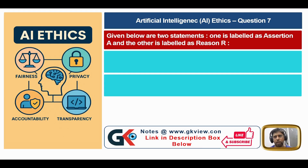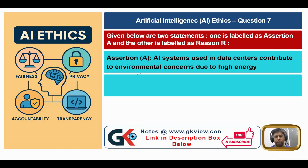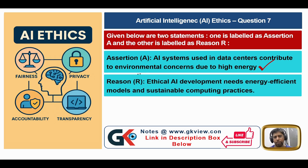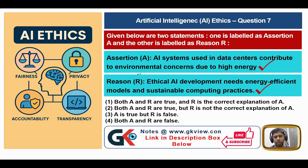Question number seven: Assertion A — AI systems used in data centers contribute to environmental concerns due to high energy consumption — this assertion is true because AI requires high energy. Reason R — ethical AI development needs energy-efficient models and sustainable computing practices — the reason is also true. The answer is one: both A and R are true, and R is the correct explanation of A.